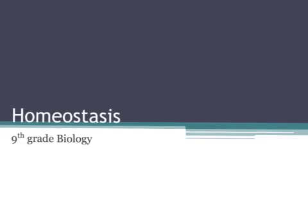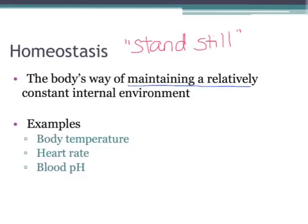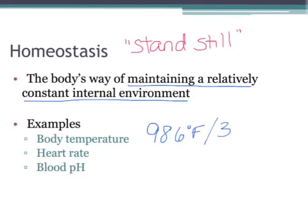Homeostasis is something really important that your body does. We're going to talk briefly about how your body maintains homeostasis, and this will come up again when we're talking about the nervous system. The word homeostasis basically means 'stand still' — not that your body prefers to be in the same position, but it wants to maintain a relatively constant internal environment. The easiest example is your body temperature, which for humans should be around 98.6 degrees Fahrenheit or 37 degrees Celsius.